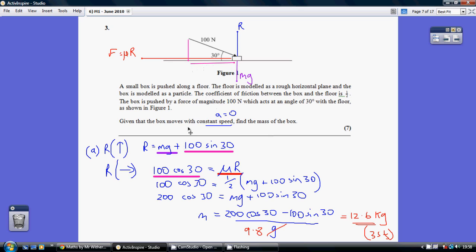Our goal is to find the mass of the box. We're going to resolve horizontally, but in order to do this we need to work out the friction, and a component of the friction is the normal reaction. So we have to kick off by resolving vertically.